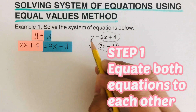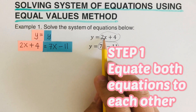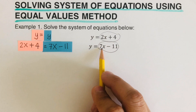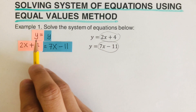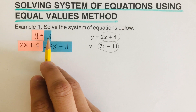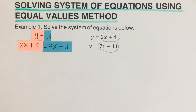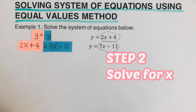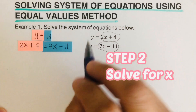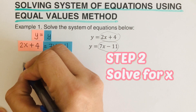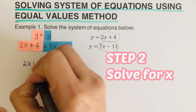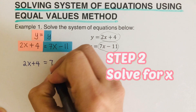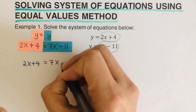Since y is equal to y, that means 2x plus 4 is equal to 7x minus 11. So we can go ahead and solve for x, which is the second step. In this case, we write: 2x plus 4 equals 7x minus 11.